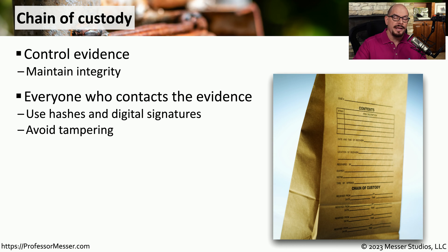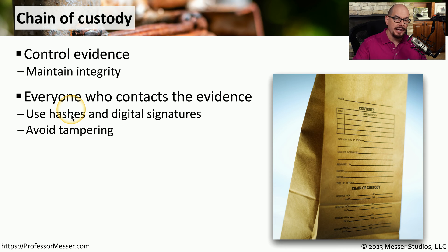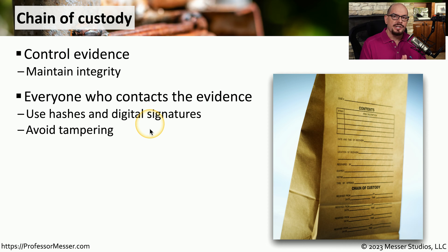In the physical world, we would take evidence and place it into a bag that could be sealed. If anyone accesses that evidence inside of the bag, they would need to document that on the bag itself. In the digital world, we can use hashes and digital signatures to maintain the integrity of the data and understand exactly who accesses that data at any particular time. This allows us to understand exactly how this data has been stored during a particular time frame — we know who accessed the data, and we can confirm the data we're looking at in the future is exactly the same data that we originally collected.